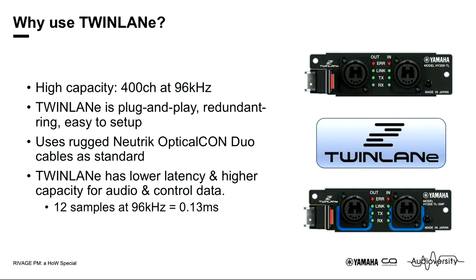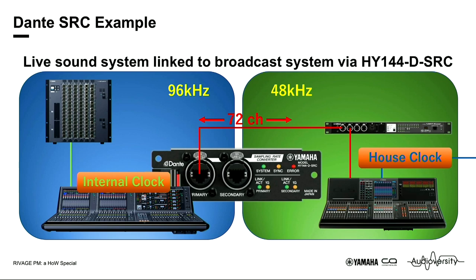You may be wondering why we use Twinlane, or what Twinlane is. Twinlane is Yamaha's own fiber optic network system that carries 400 channels at 96 kHz. It's plug and play, has redundancy built in, and is easy to set up. We use it mainly because it has lower latency and higher capacity for audio and control data than Dante provides. For example, if you have a live sound system running at 96 kHz for lower latency in-ear monitoring, but your existing broadcast system works at 48 kHz, our solution is a Dante card with sample rate converters that can transmit 72 channels bi-directionally between the two systems.